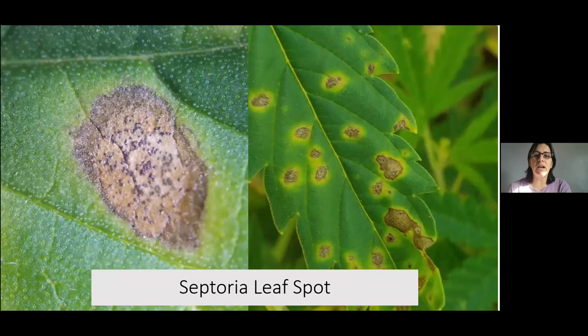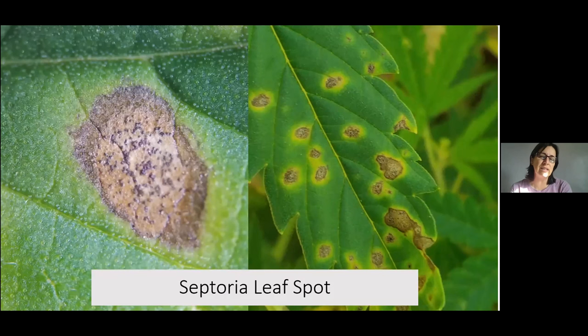Here is septoria leaf spot up close. On the right you'll see those irregular spots with that bright yellow halo around them. On the left you'll see black dots in the center of the spot — those are called pycnidia. They're like capsules holding spores, which makes the pathogen drought-tolerant, heat-tolerant, and fungicide-resistant. Each pycnidium is about the size of a black pepper flake and will hold about 30 to 60 spores.